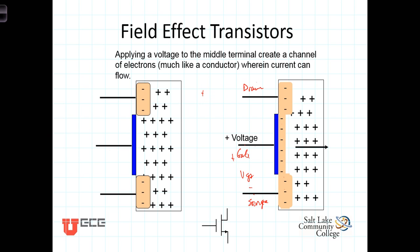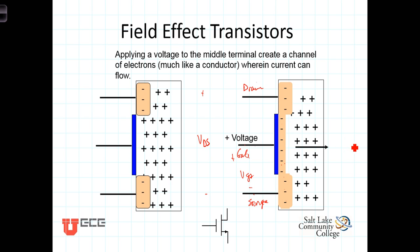When a voltage is applied between the drain and the source — referred to as VDS — that voltage causes current to flow through the N-channel. This channel can be increased in size, thereby increasing the current-carrying capability of the channel. So a small gate voltage gives you a small channel, and a large gate voltage gives you a large channel.